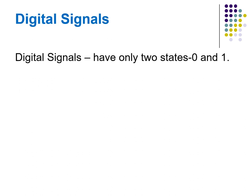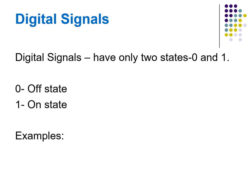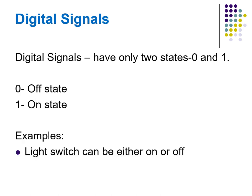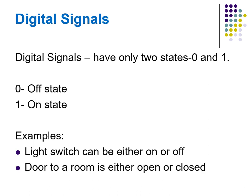Digital signals have only two states: zero and one, where zero represents the off state and one represents the on state. For example, a light switch — it can be either on or off; a door to a room — it is either open or closed.